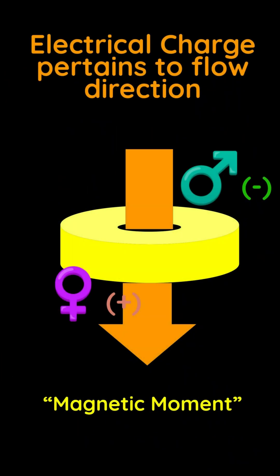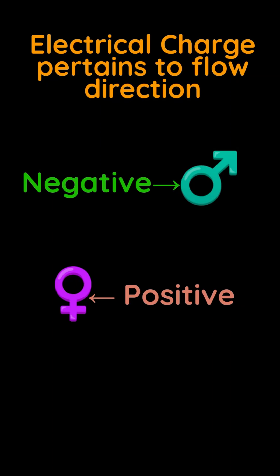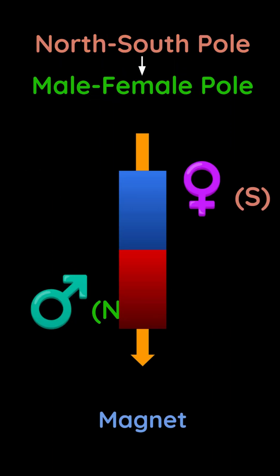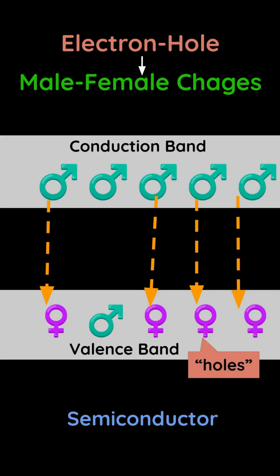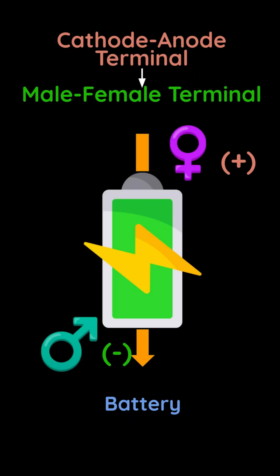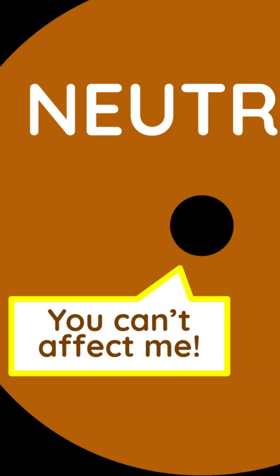Electrical charge is the flow direction of virtual photons through a particle. We replace negative charge with male charge and positive charge with female. A female charge is the entrance for the virtual photons — in semiconductors, this is called a hole. A male charge is the exit. A neutral charge has no threads to transfer the motion of the virtual photons.